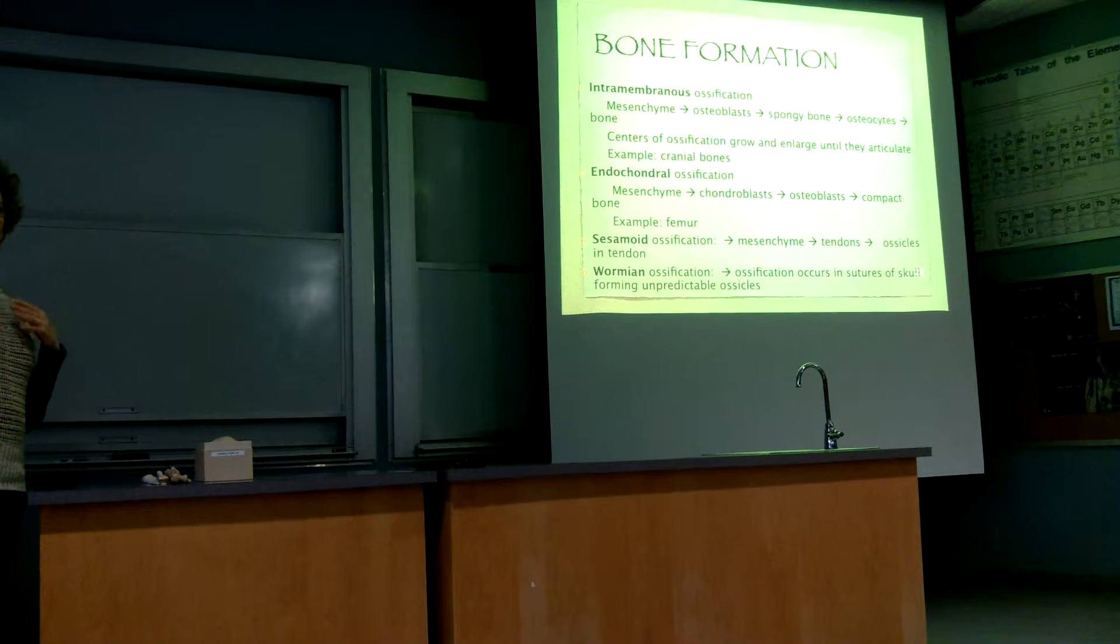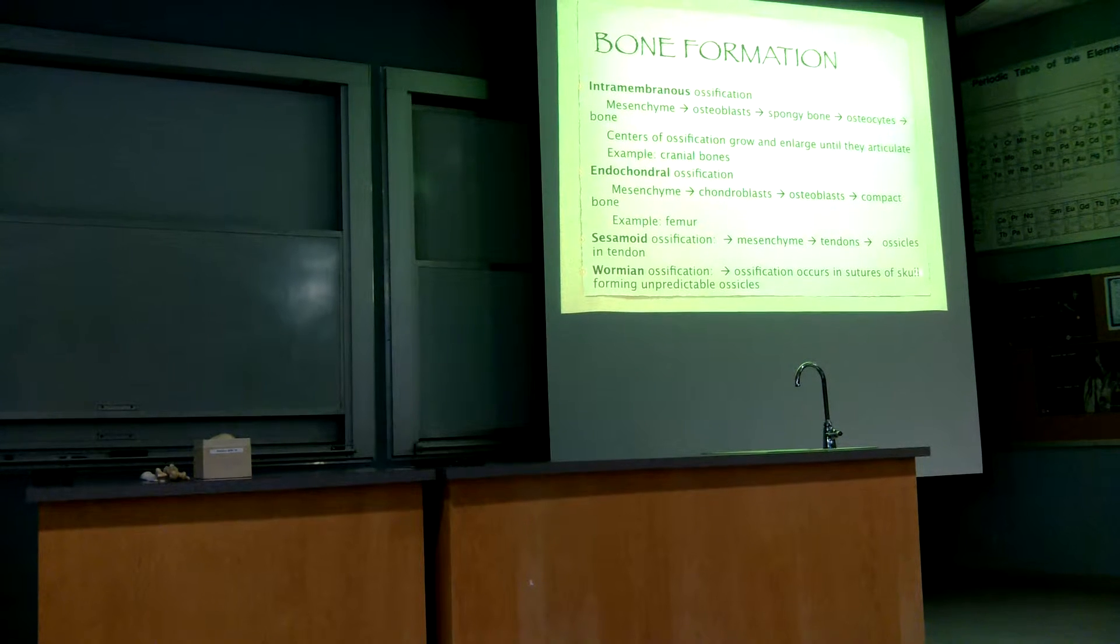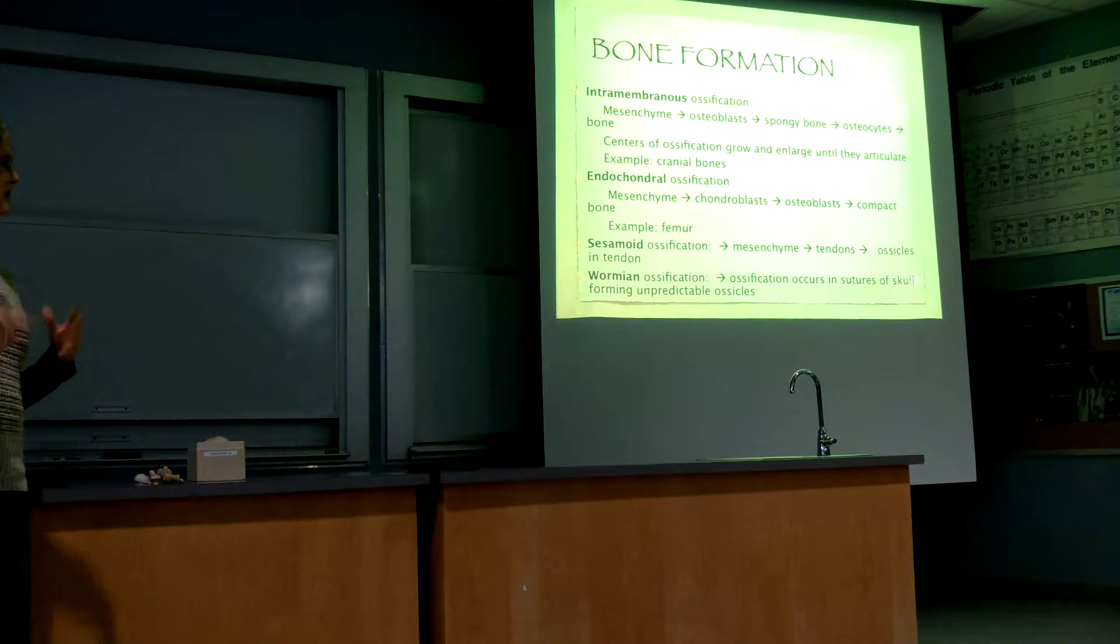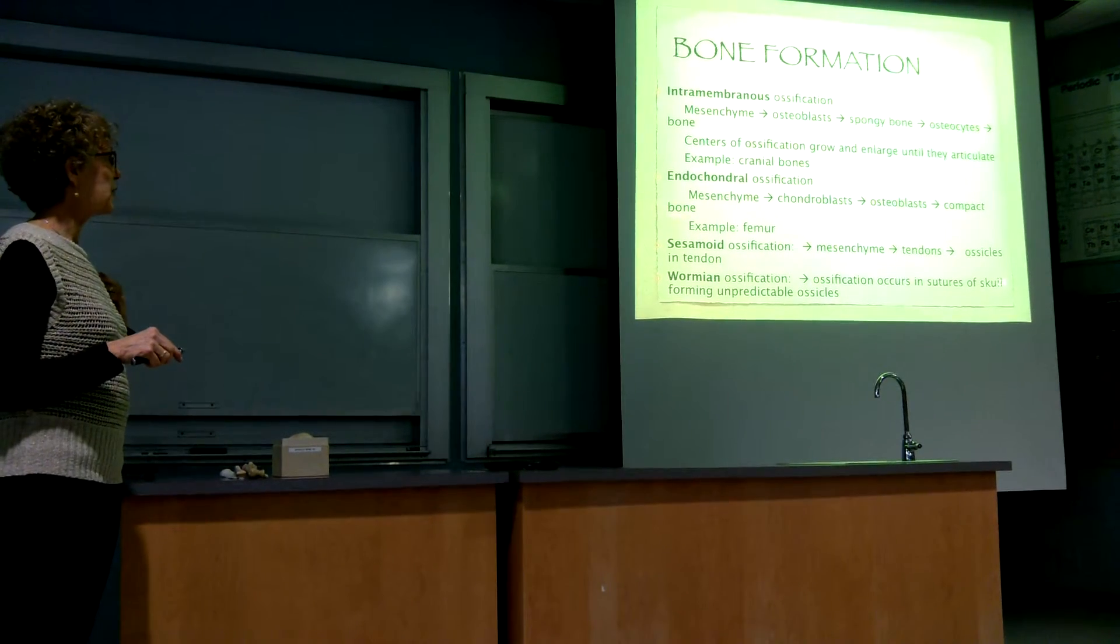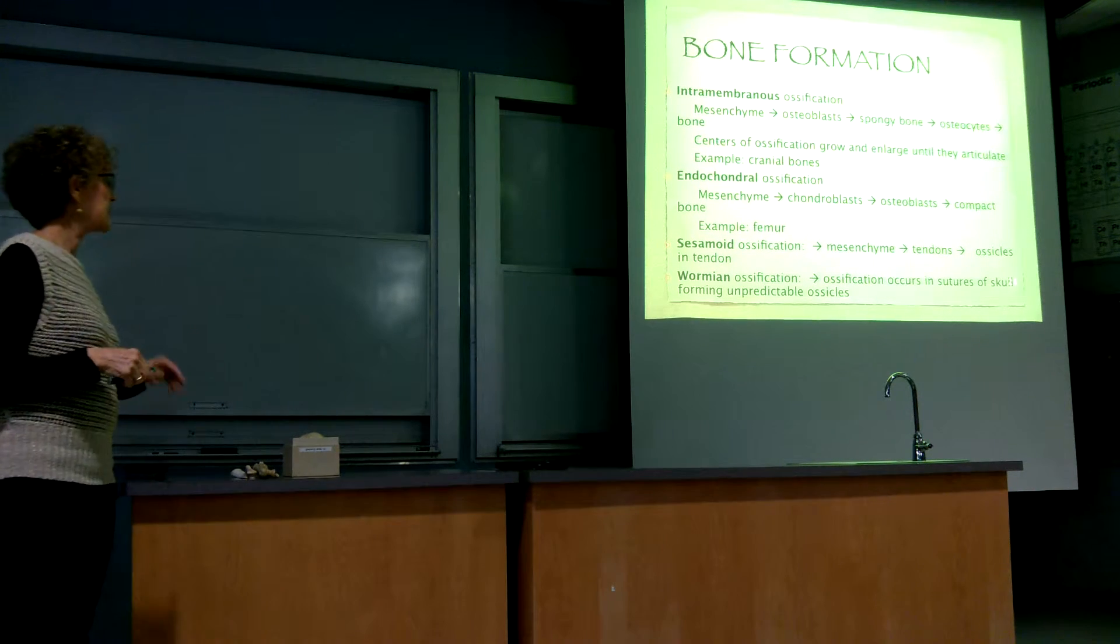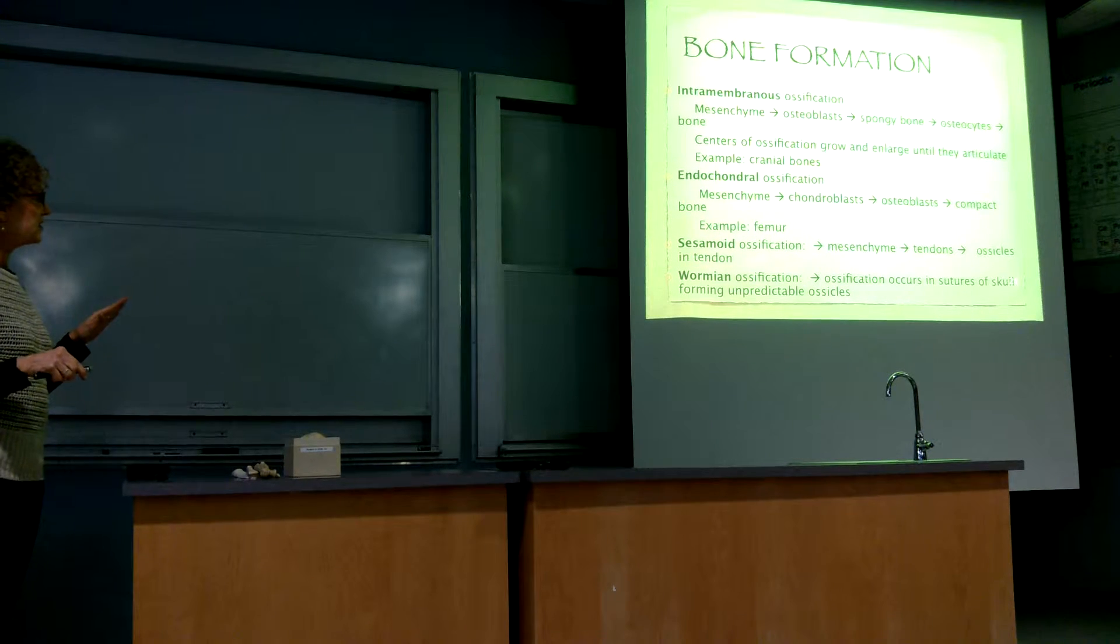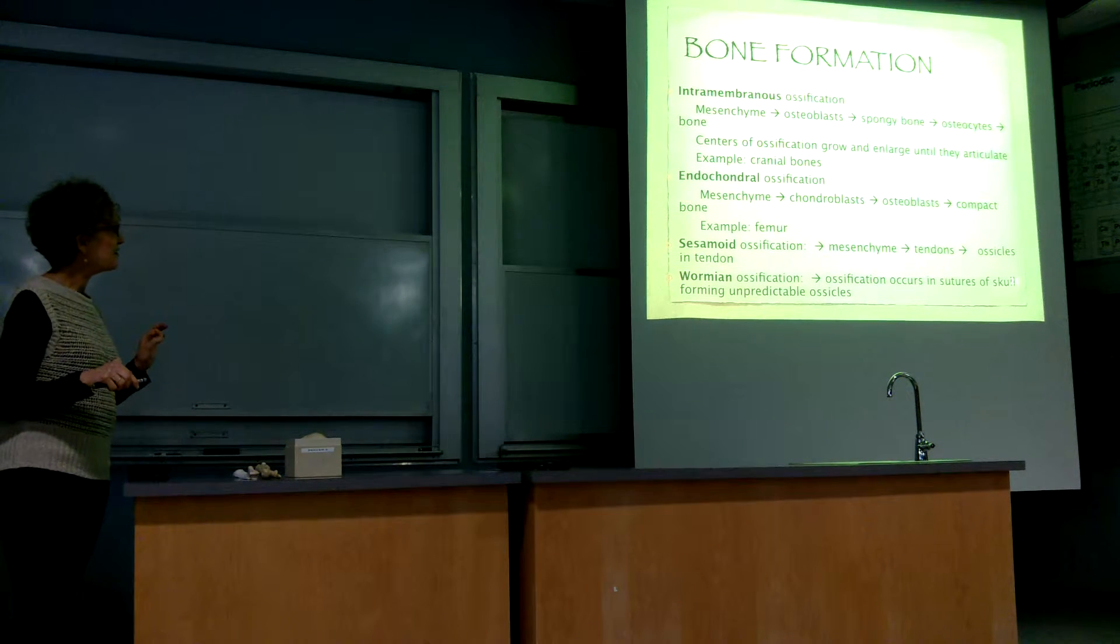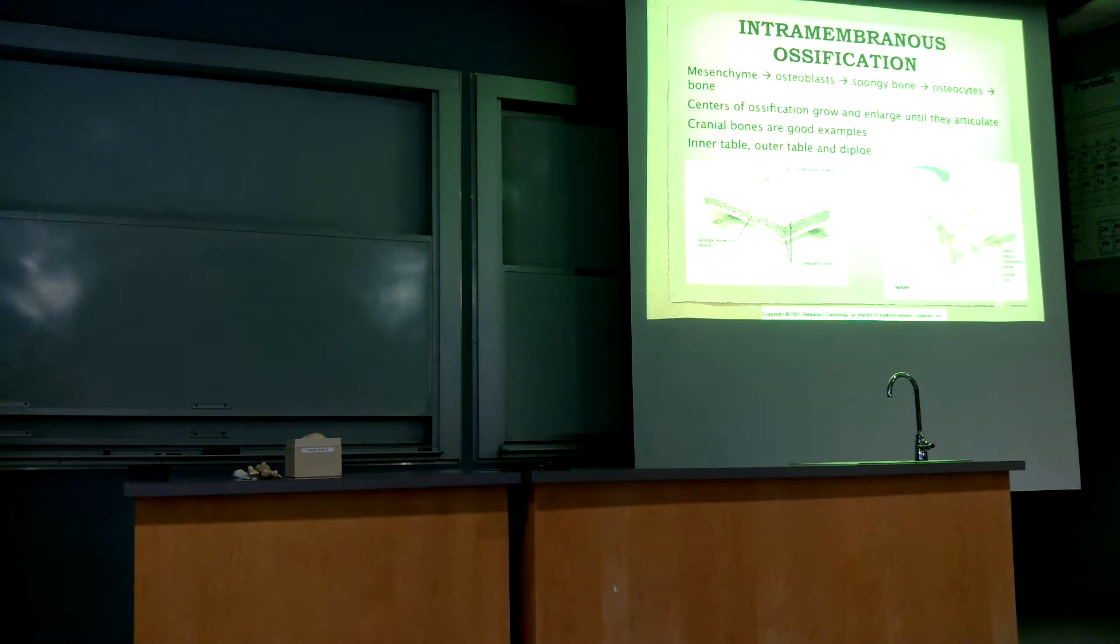And then the endochondral, of course, is the formation in cartilage. And again, we have mesenchyme, the same, but instead of going right into osteoblasts, it goes into the chondroblasts and forms in cartilage. And then we form osteoblasts. And then, differently, we form compact bone first, and then spongy bone. And then sesamoid, don't worry too much about these, but these are just two different types of bones we have. Sesamoid is kind of different. It occurs in the tendons, and it's just where there's calcium and ossification inside the tendon.